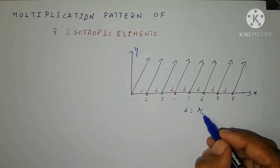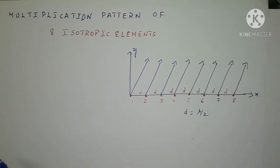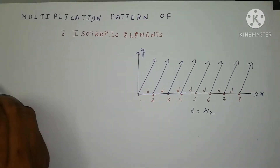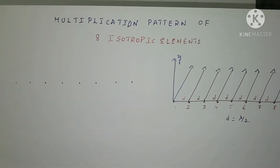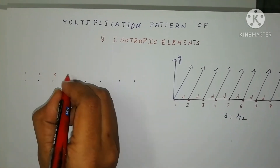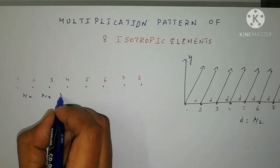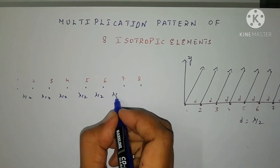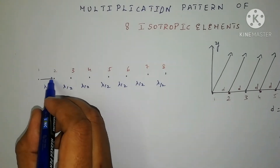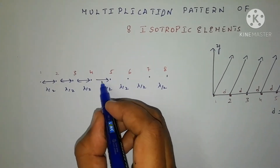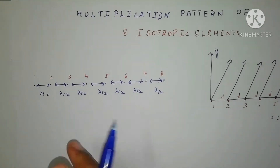Here also the same case applies — each and every element will be provided with equal spacing. For this type of array, within just two to three steps I will get the resultant pattern, so that is the simplicity of this multiplication pattern concept. I have taken eight isotropic elements placed with equal spacing, one through eight, and each and every element is separated with equal distance lambda by two. Having all elements with equal spacing, each and every element we will consider as individual units and transform them into smaller units, so all eight individual units are transformed into a simple unit array.